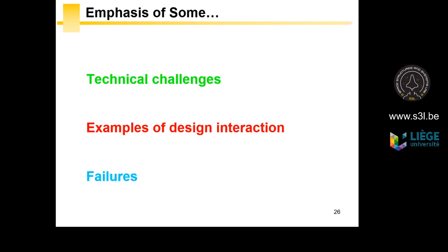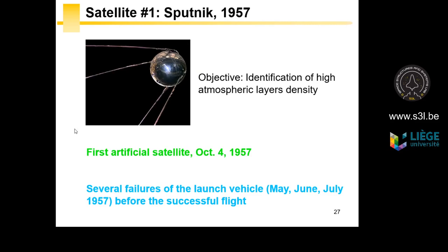Here you will discover different satellites. I emphasize in green the technical challenges of the mission, in red the design interactions within the satellite, and in blue the kinds of failures encountered. We begin with Sputnik, the first satellite in space, launched in 1957 by the Russians. For most of you, this was during the Cold War between the USA and the USSR. The first major success was won by the Russians with the successful launch into orbit of an artificial satellite.